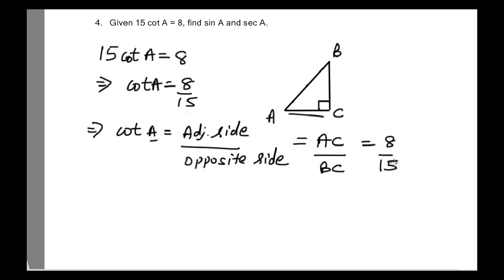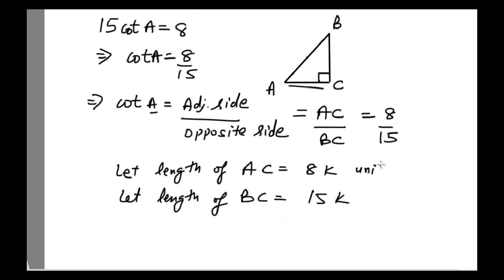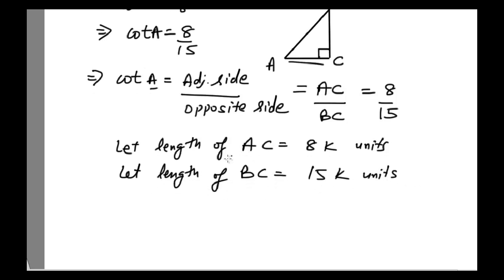So now we have the ratio of AC to BC equal to 8 divided by 15. From this information, we can suppose that let the length of AC equal to 8K and let the length of BC equal to 15K, whatever the units are — 8K units and 15K units.